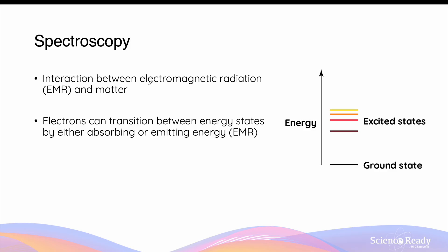Spectroscopy is the interaction between electromagnetic radiation and electrons in atoms, that is matter. Electrons can either absorb or emit energy in the form of EMR to transition between orbits of different energy levels. The ground state refers to the energy level that electrons are normally found in, and the excited states refer to the energy levels or orbits to which electrons can move up to when they absorb a particular amount of energy. In the Bohr atomic model, electrons can transition between ground states and various excited states by absorbing or releasing energy.